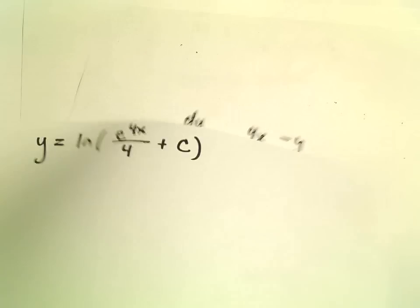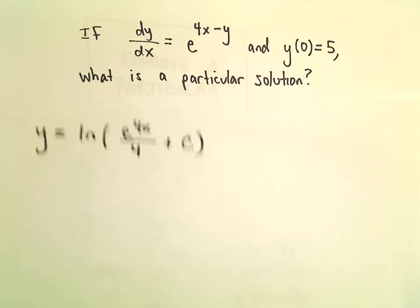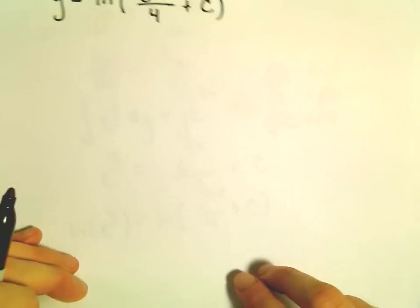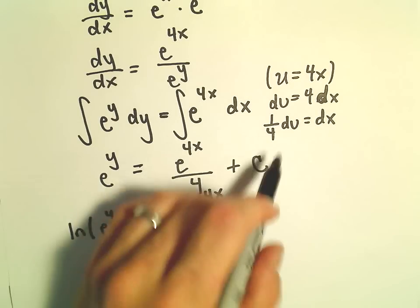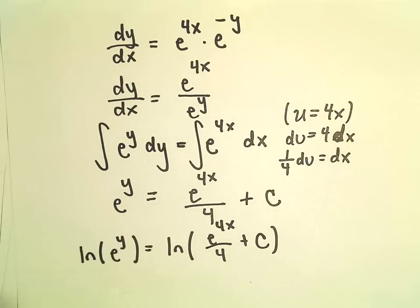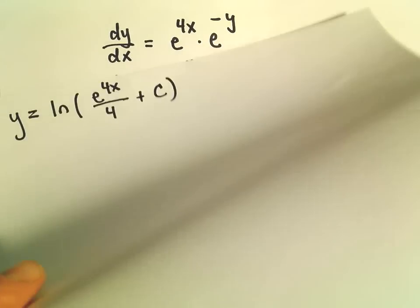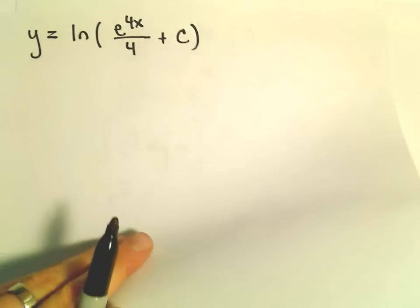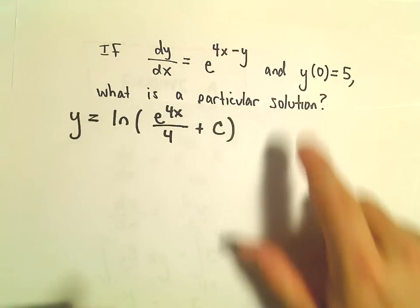Here's where I'll solve for the C value. We could have done it before we took the natural logarithm - it probably would have been a little more simple then. We could have saved this step. Either way is okay.